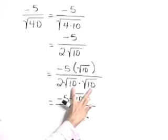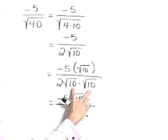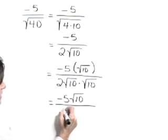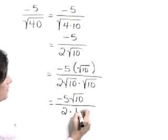In the denominator, square root of 10 times the square root of 10. That's the square root of 100, which brings you right back to 10. So let's write the denominator as 2 times 10.